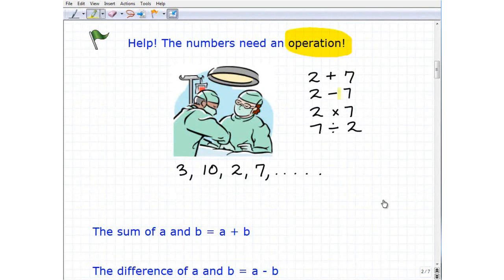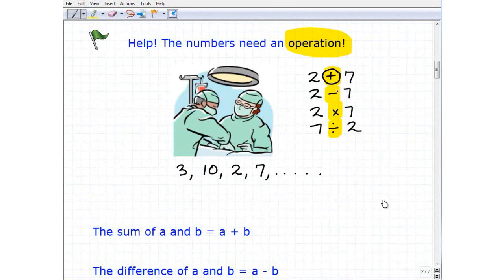These things that we can do with numbers are called number operations. And specifically, these particular things right here, like this addition sign, that's called a mathematical operator.